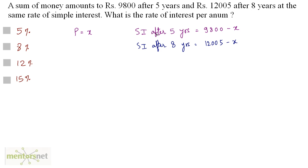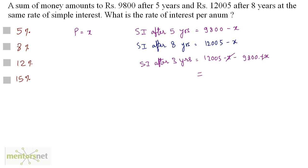Now I have the simple interest after 5 years and after 8 years. If I take the difference of both, I get the simple interest after 3 years. That equals 12,005 minus x minus 9,800 plus x. The x's cancel out, giving 12,005 minus 9,800 which is 2,205. Dividing by 3 gives the simple interest for 1 year.